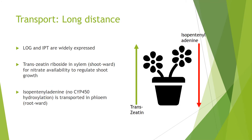Although the enzymes for synthesis, LOG and IPT, are widely expressed in plants, long-distance transport is very important for communication between organs. Trans-zeatin riboside, which is before LOG cleavage, is found in the xylem and used for shootward transport to communicate nitrate availability and coordinate it with shoot growth. However, isopentanyl adenine, without the hydroxylation on the substituent side chain of adenine, is transported in the phloem and goes rootwards.